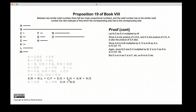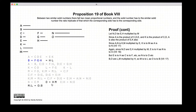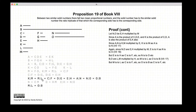We already knew that E to H equals N to O, so we add it to our list of equal ratios. Now looking at H to L and H to M — crossing off the H's — we get that the ratio of M to L equals the ratio of O to B. So M to L equals O to B, which is added to our list of equal ratios.